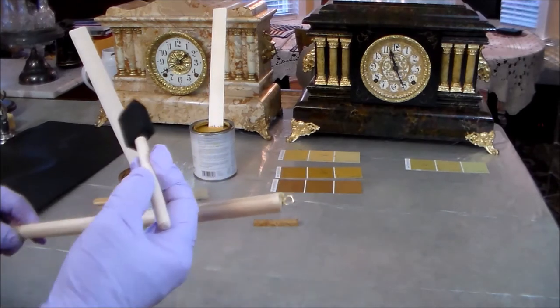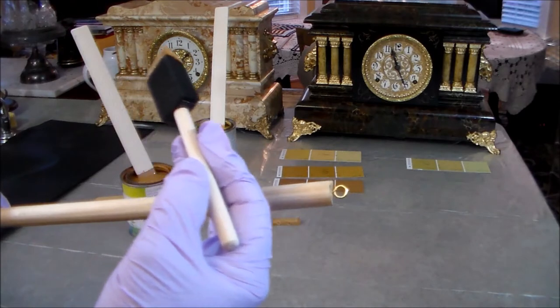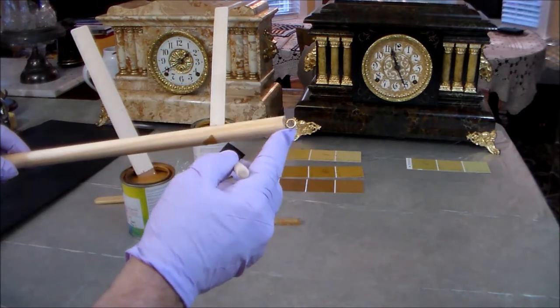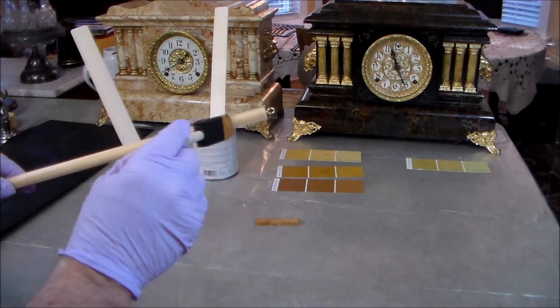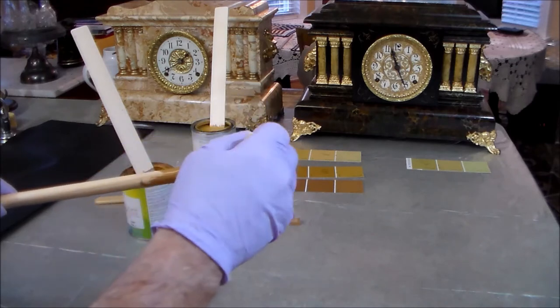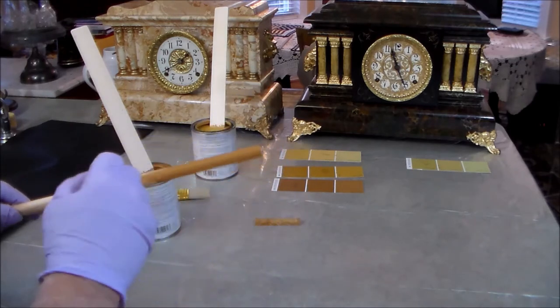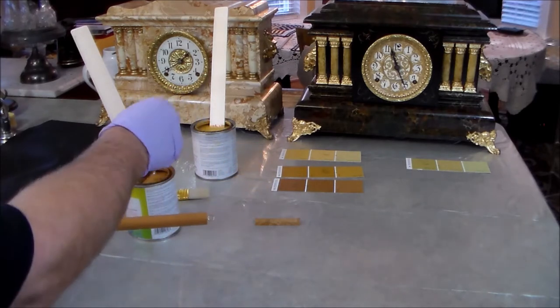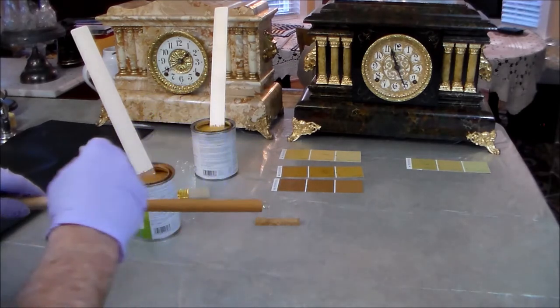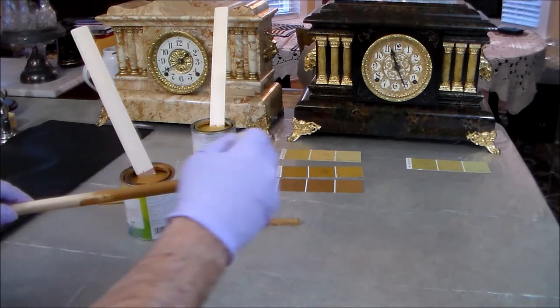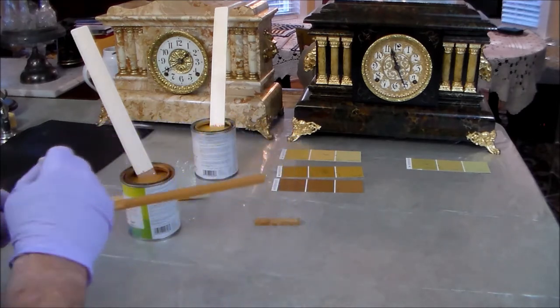Now, I've put a hook in the end, a regular picture hook, so that I can hang this up. So I'm just going to lay down my base coat on my column. And I'm using a foam brush here. And you want to get a nice, good, even base coat.